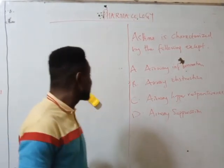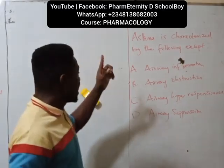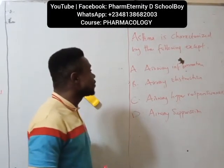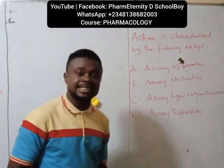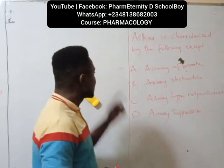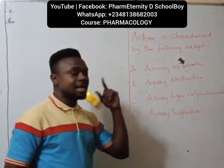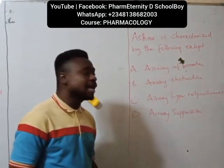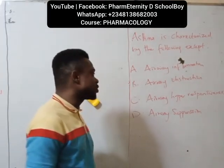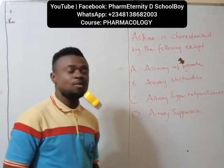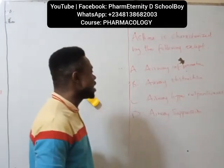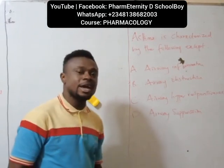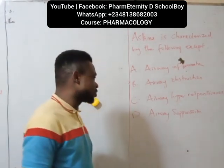The question says: Asthma is characterized by the following except — A. Airway inflammation, B. Airway obstruction, C. Airway hyper-responsiveness, D. Airway suppression.